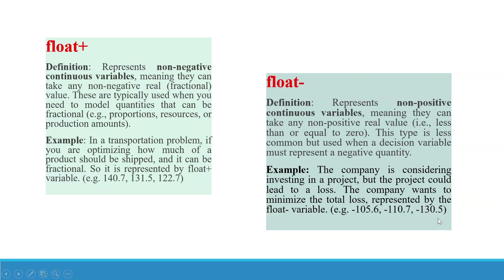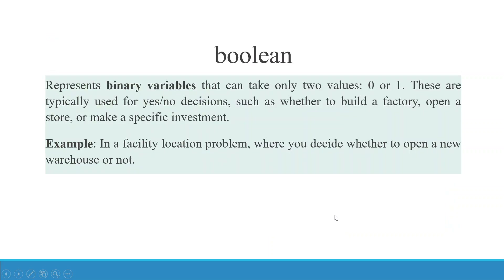Boolean represents binary variables that can take only two values: zero or one. These are typically used for yes-or-no decisions, such as whether to build a factory, open a store, or make a specific investment. For example, in a facility location problem, you decide whether to open a new warehouse or not.